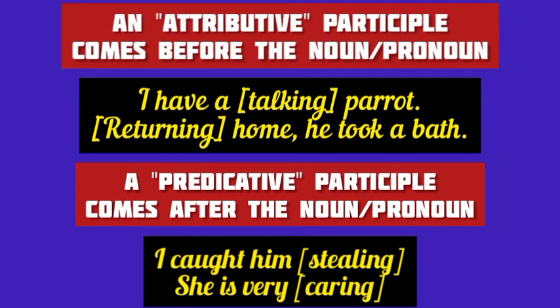From the examples on your screen, we may observe that a participle may come before the noun or pronoun it describes — that is attributively — or after the noun or pronoun — called predicatively. For example, I have a talking parrot. Here, talking is the present participle coming before the noun parrot.